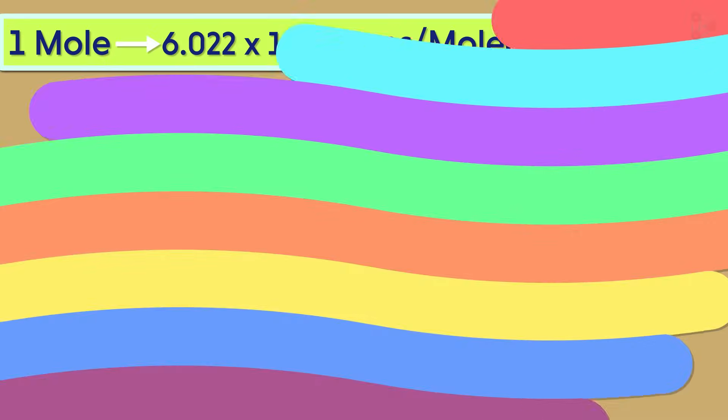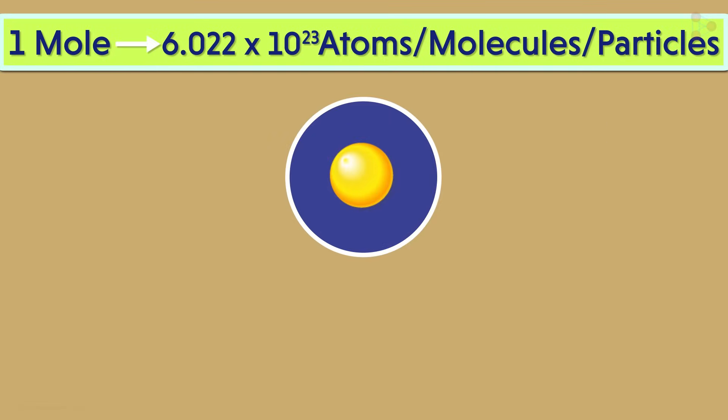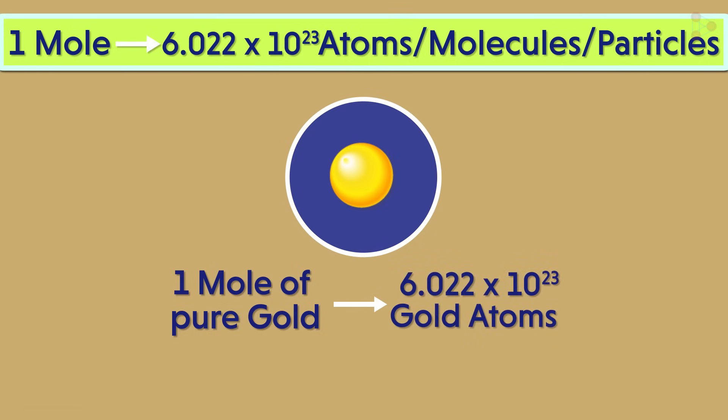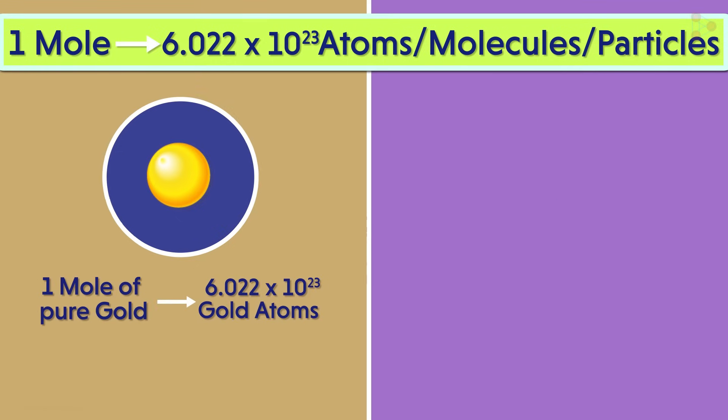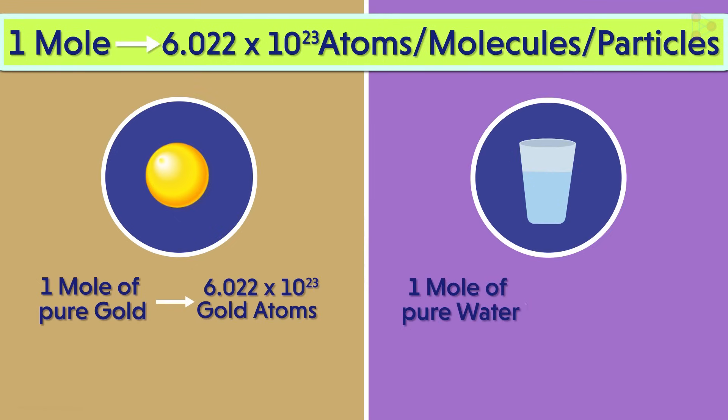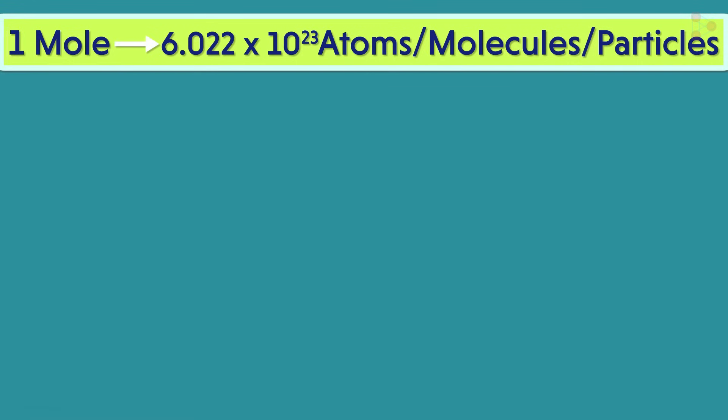Let's see if you've understood the concept well. Now here's one mole of this pure gold. How many atoms does it have? Yes, as it's one mole, it will have 6.022 times 10 raised to 23 atoms in it. Similarly, one mole of pure water will have 6.022 times 10 raised to 23 water molecules inside it.